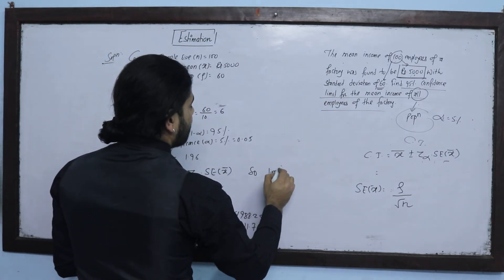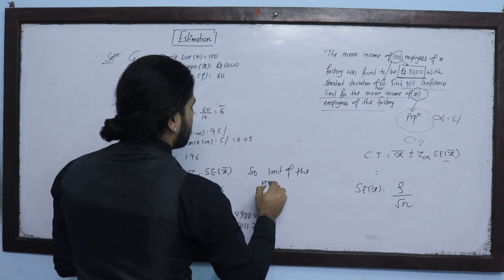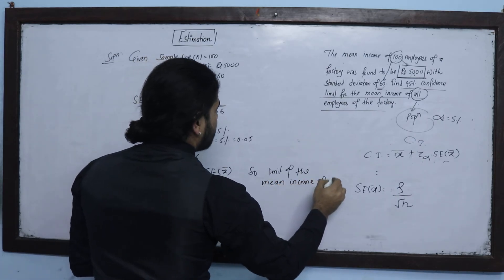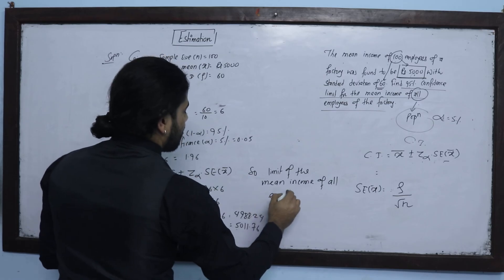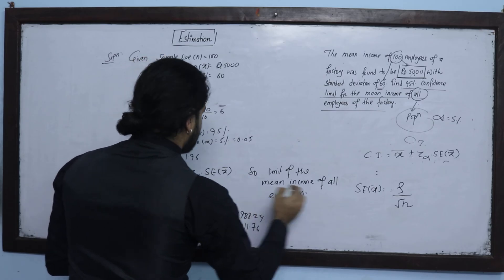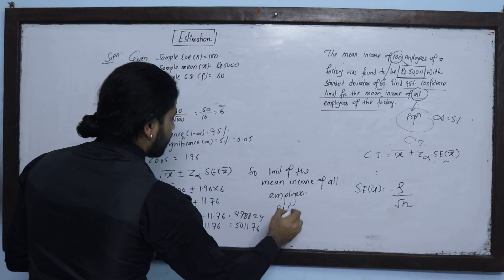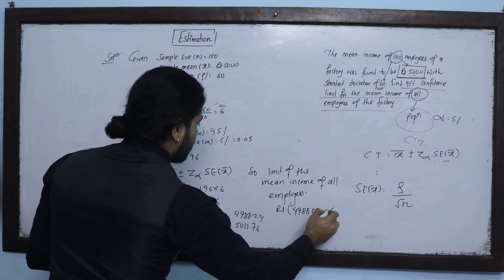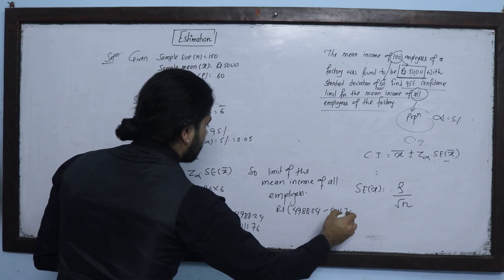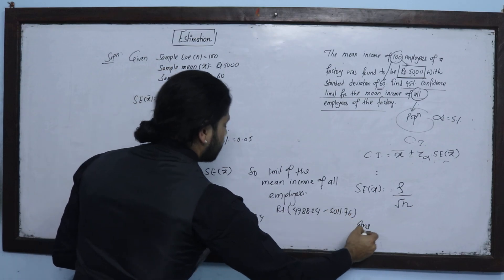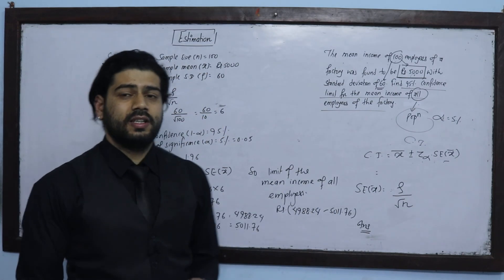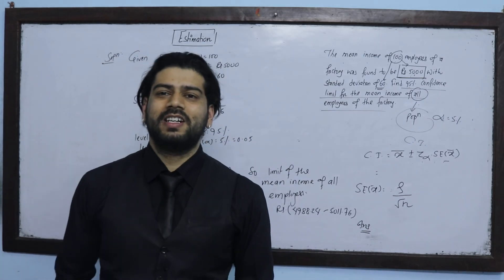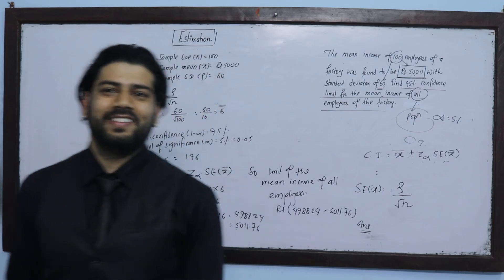So we get the 95% confidence limit for the mean income of all employees. Next I will solve more questions. Thank you.